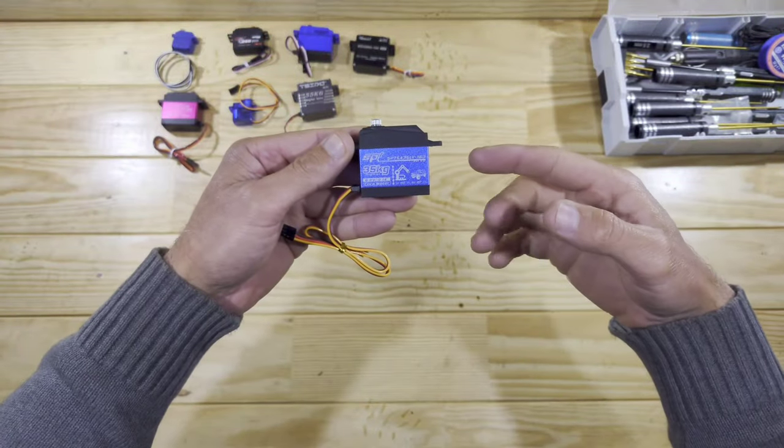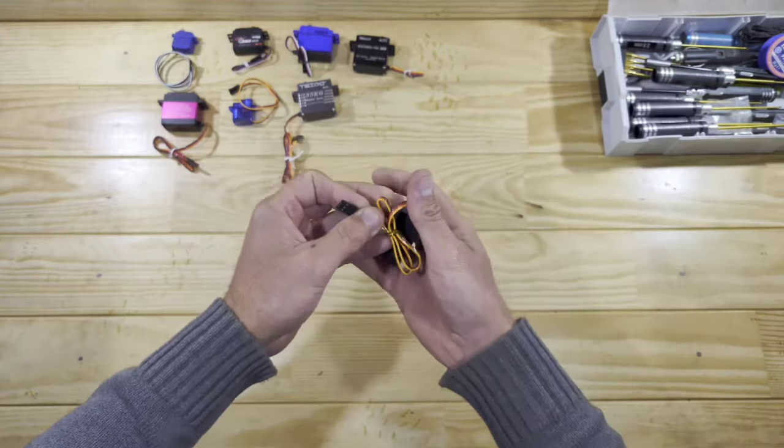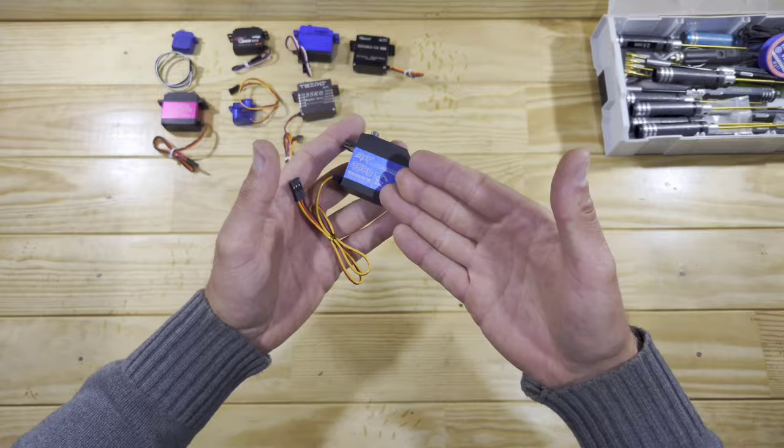When you have reassembled the servo, then you are all done and now the servo has been reversed. So that's a very easy job. If your transmitter doesn't have a function to reverse it inside the transmitter, you can do it via this way.